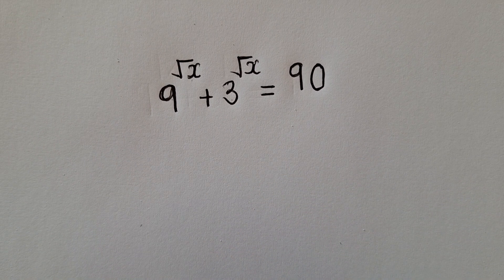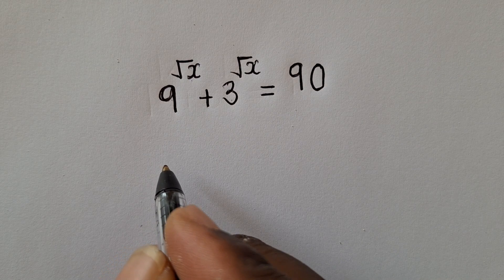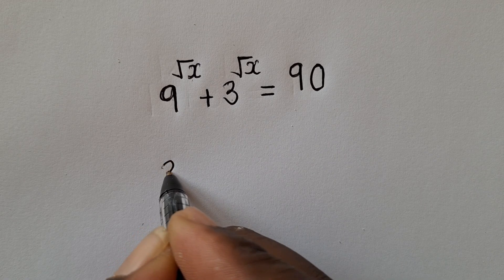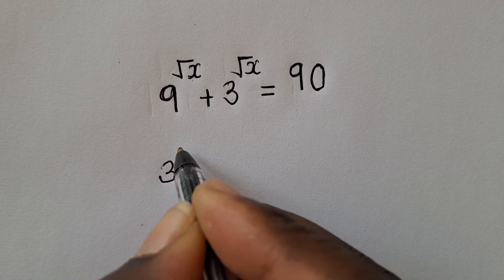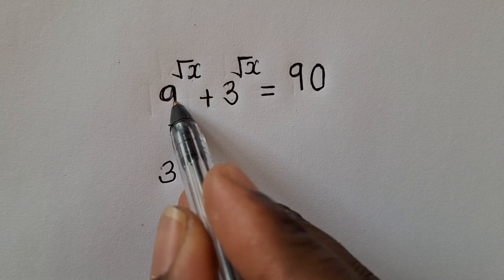So without wasting our time, solving for x, we're supposed to write this as 3 power 2. Okay, so we know that 3 power 2 will give us 9.